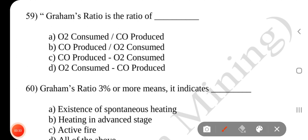Question number 59. Graham's ratio is the ratio of dash. Answer is B CO produced divided by O2 consumed.